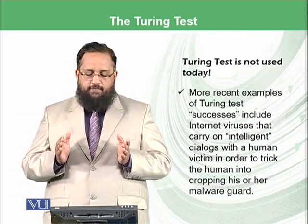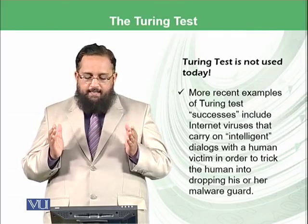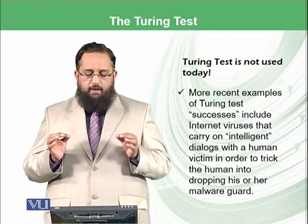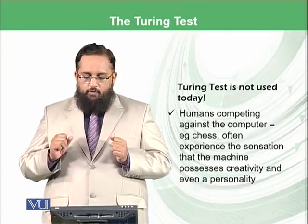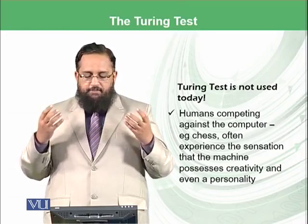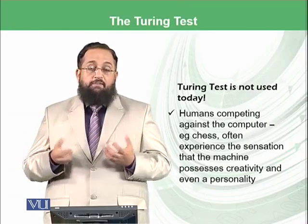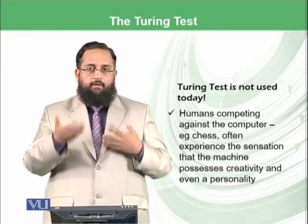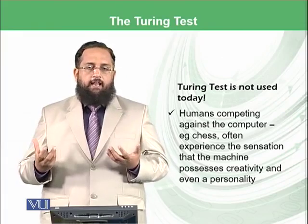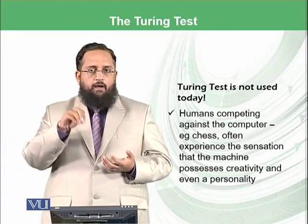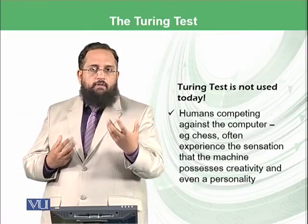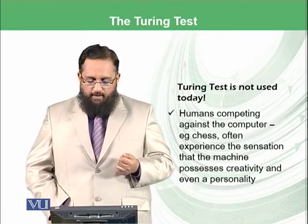More recent examples of Turing test successes include internet viruses that carry on intelligent dialogue with human victims in order to trick them into dropping their malware defenses. Another example is humans competing against the computer in chess. People often experience the sensation that the machine possesses creativity and even a personality. Many people playing chess with the computer feel that this is not just an intelligent agent but actually a human with a real personality.